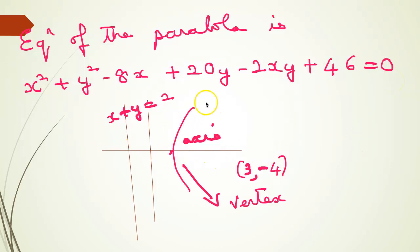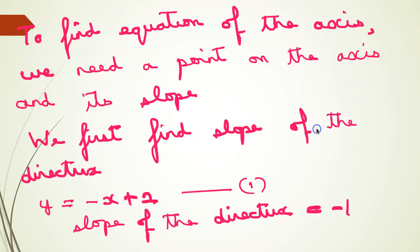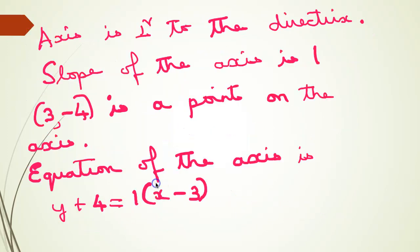Now the vertex is the midpoint of the focus and the point on the directrix. To find the equation of the axis, we need a point on the axis and its slope. First we find the slope of the directrix: x + y = 2 gives y = -x + 2, so comparing with y = mx + c, the slope of the directrix is -1. Since the axis is perpendicular to the directrix, the slope of the axis is 1.